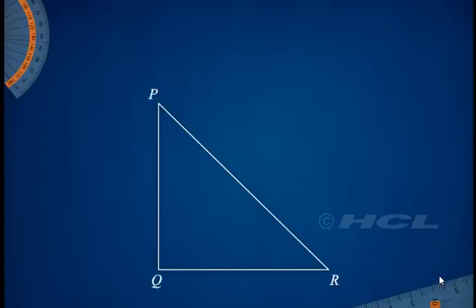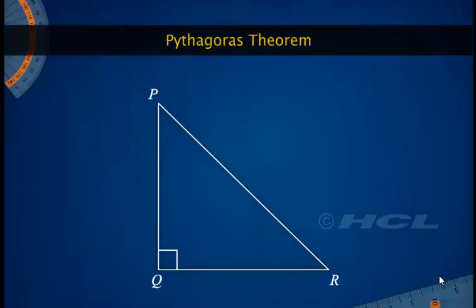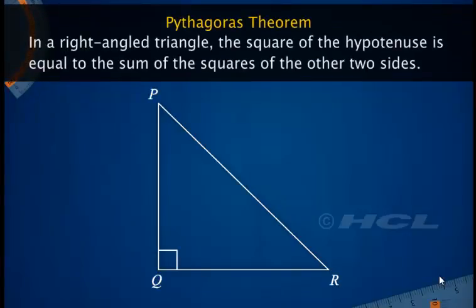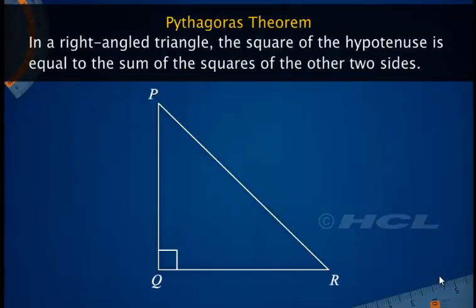You have already proved and used a very important theorem on right-angled triangles. Can you recall it? Yes, it is the Pythagoras theorem. This theorem states that in a right-angled triangle, the square of the hypotenuse is equal to the sum of the squares of the other two sides.